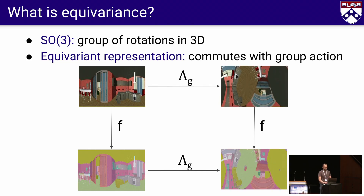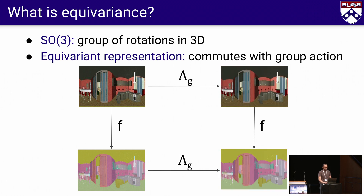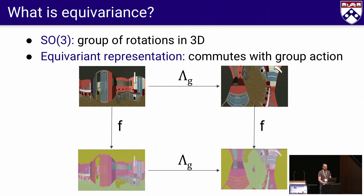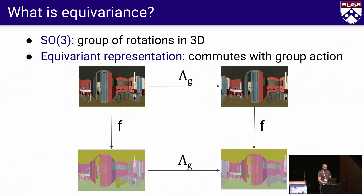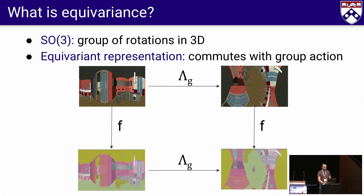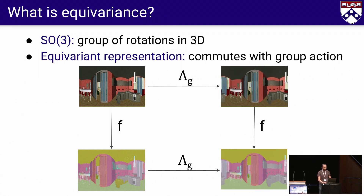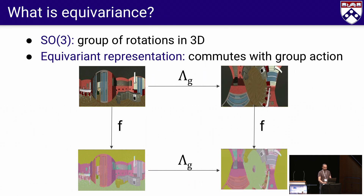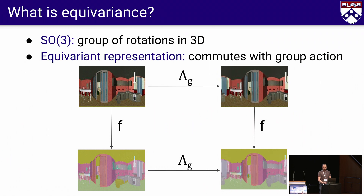What is Equivariance? An equivariant map is a map that commutes with the action of a group — in our case, 3D rotations. Suppose you have a panoramic image as input and our map performs semantic segmentation. If our map is equivariant, rotating the panorama is equivalent to rotating the semantic segmentation output.